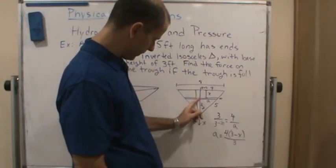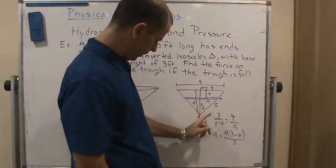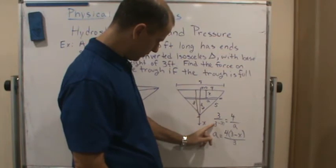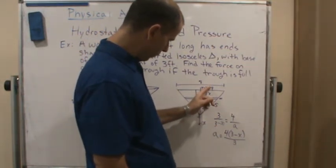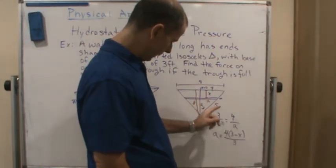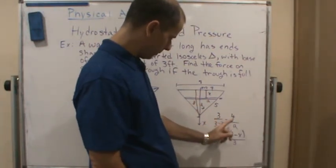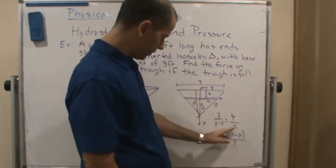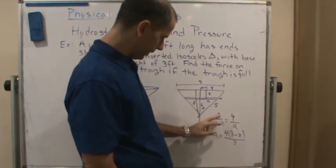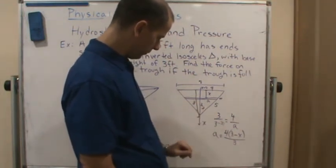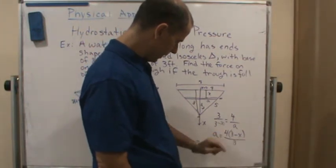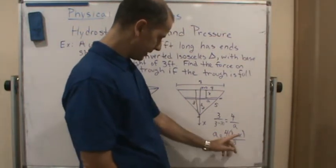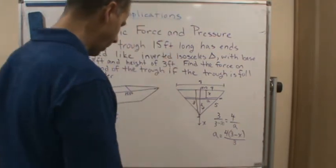So we can go 3 goes with 3 minus x, and then 4 goes with a. So we get 4 goes with a, so this is our proportion. And then if we solve for a, you basically cross multiply and solve for a. You get 4 times 3 minus x divide by 3, and that's a.